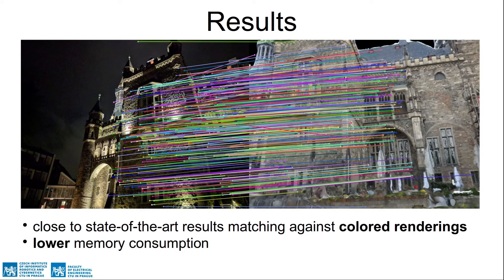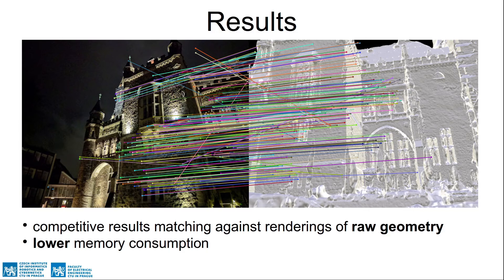When rendering both the image and depth map from a textured or colored mesh, our pipeline is close to state-of-the-art while achieving lower memory consumption. The same pipeline without any adjustments is also able to achieve competitive results when matching against renderings of meshes without any color information, opening the possibility to use, for example, lidar scans to generate the map representations.